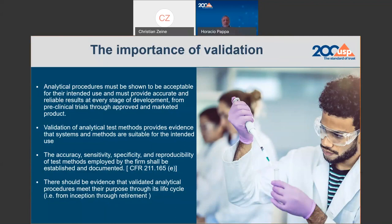The validation process will provide evidence that systems and methods are suitable for the intended use. That phrase, 'suitable for the intended use,' will be present in all activities associated with validation. The Code of Federal Regulation in the US says that the accuracy, sensitivity, specificity, and reproducibility of test methods employed by the firm should be established and documented. That is the other important part of the validation, which means that all the experiments you will perform in order to demonstrate the suitability for the intended use will be documented.